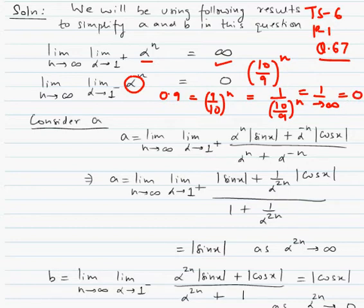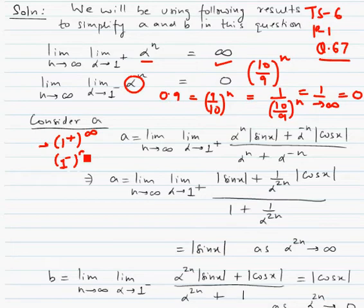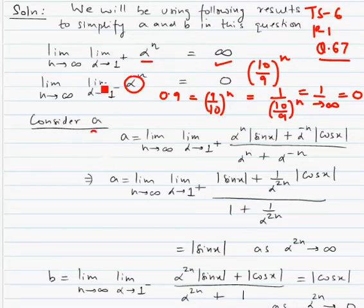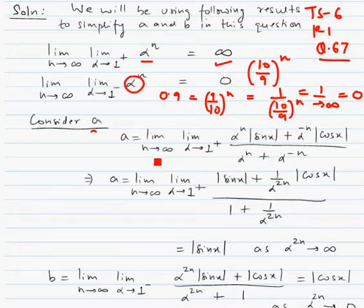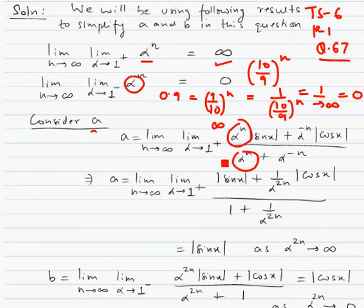So basically, if a number is more than 1 and we take it to the power infinity, the answer is infinity. If a number is less than 1 and we take it to the power infinity, we get 0. Now let's look at the limiting expression we have to find, where alpha is approaching one from the right (one plus) and n approaches infinity. This part approaches infinity and that part approaches infinity, so it's an infinity over infinity indeterminate form.